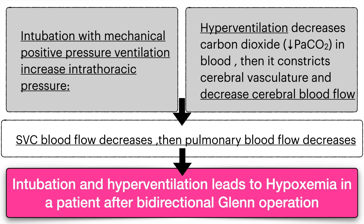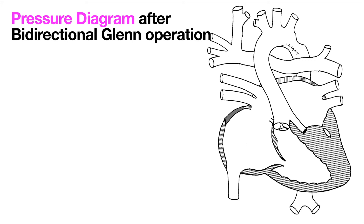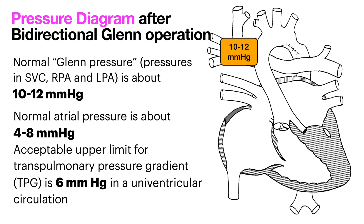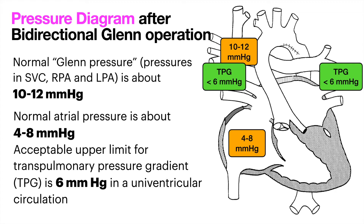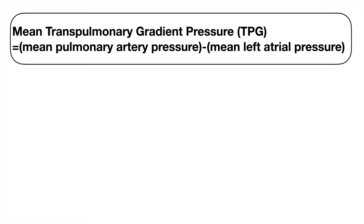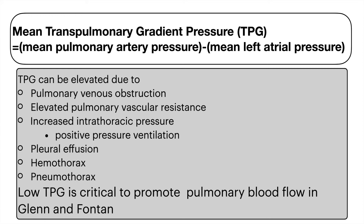The pressure diagram after bidirectional Glenn shows that normal Glenn pressure in the SVC, RPA, and LPA is about 10–12 mmHg, and normal atrial pressure is 4–8 mmHg. Therefore, the acceptable upper limit for the transpulmonary pressure gradient is 6 mmHg in univentricular circulation. Mean transpulmonary gradient equals mean pulmonary artery pressure minus mean left atrial pressure. This gradient can be elevated due to pulmonary venous obstruction, elevated PVR, increased intrathoracic pressure from positive pressure ventilation, effusion, hemothorax, or pneumothorax. A low transpulmonary pressure gradient is critical to promote pulmonary blood flow in Glenn and Fontan circulation.